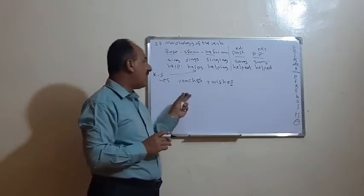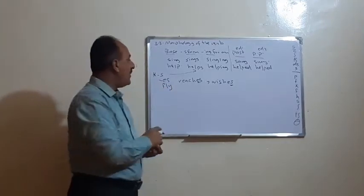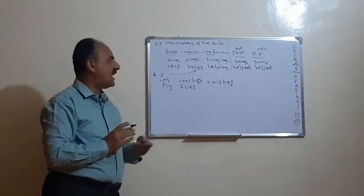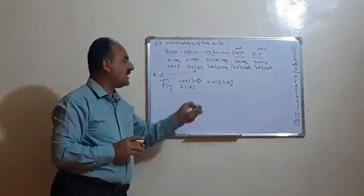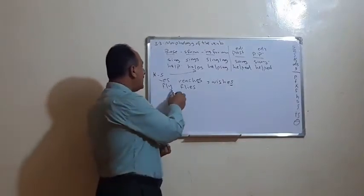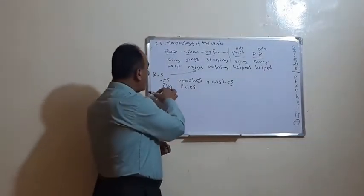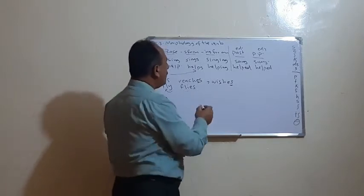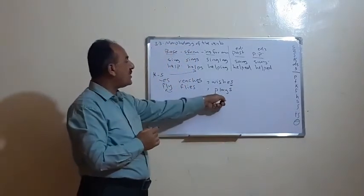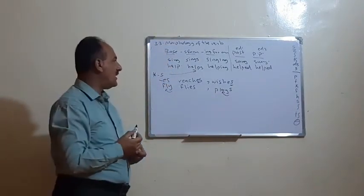Sometimes verbs end with -y. If a verb ends with -y preceded by a consonant, like 'fly' or 'cry', we change the -y to -i and then add -es. But if the -y is preceded by a vowel, like 'play', we add just -s and do not change the -y. So 'fly → flies', 'cry → cries', but 'play → plays'.